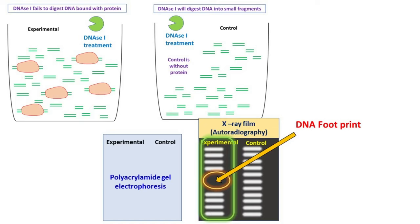The footprint is observed because the protein that was interacting with the DNA, that was bound with the DNA, protected the DNA from DNase I digestion. Now if we compare the region of footprint with the control, then these are the DNA fragments, these are the DNA sequences where the protein was bound.